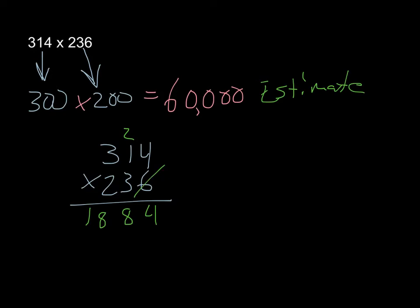Then we're going to move across. Start with 0. 3 times 4 is 12. 3 times 1 is 3, add 1 is 4. 3 times 3 is 9.